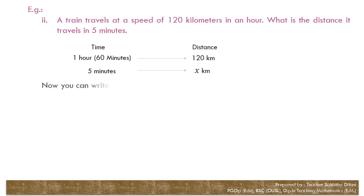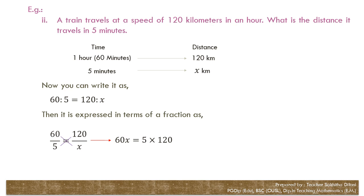Now you can write it as 60 to 5 equals 120 to X. You can express these ratios as fractions: 60 over 5 equals 120 over X. By cross multiplication, you can write that 60X equals 5 into 120.